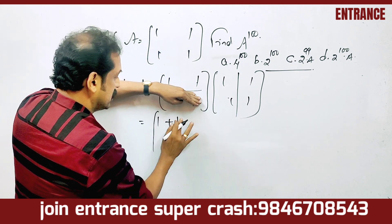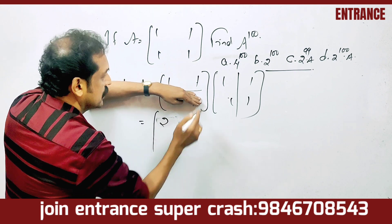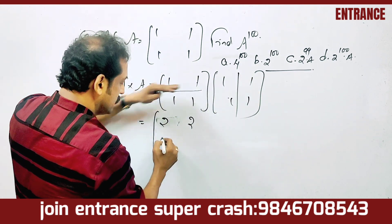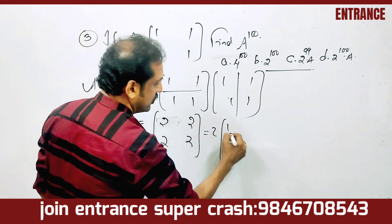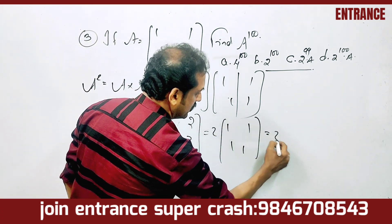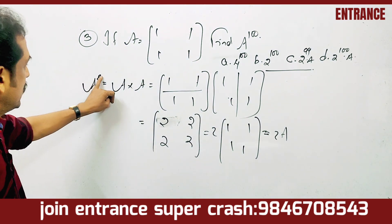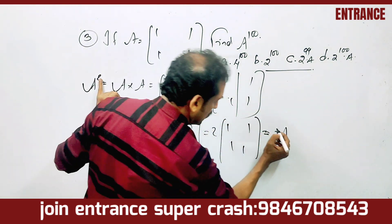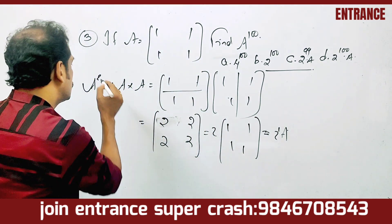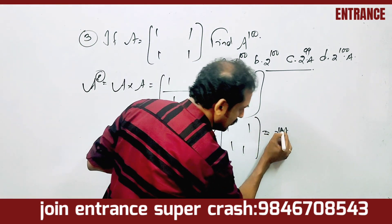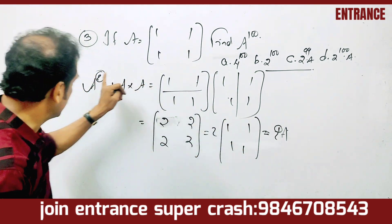That gives us 2, and every element of A squared is 2. So A squared equals 2 times [[1,1],[1,1]], which is 2 into A. Therefore A squared equals 2 raised to 1 into A.